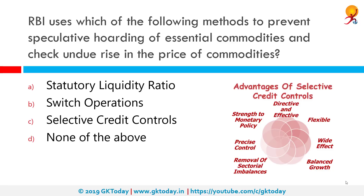The RBI uses which of the following methods to prevent speculative hoarding of essential commodities and check undue rise in the price of commodities? The correct answer is selective credit controls. Selective credit control refers to a qualitative method of credit control by the central bank, aimed at regulating credit taken for specific purposes or branches of economic activity.